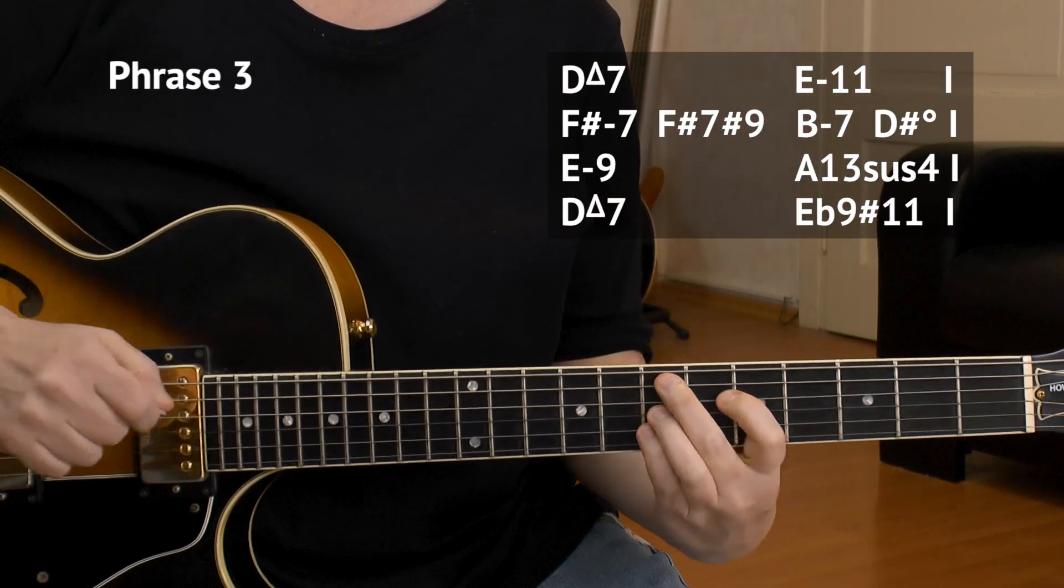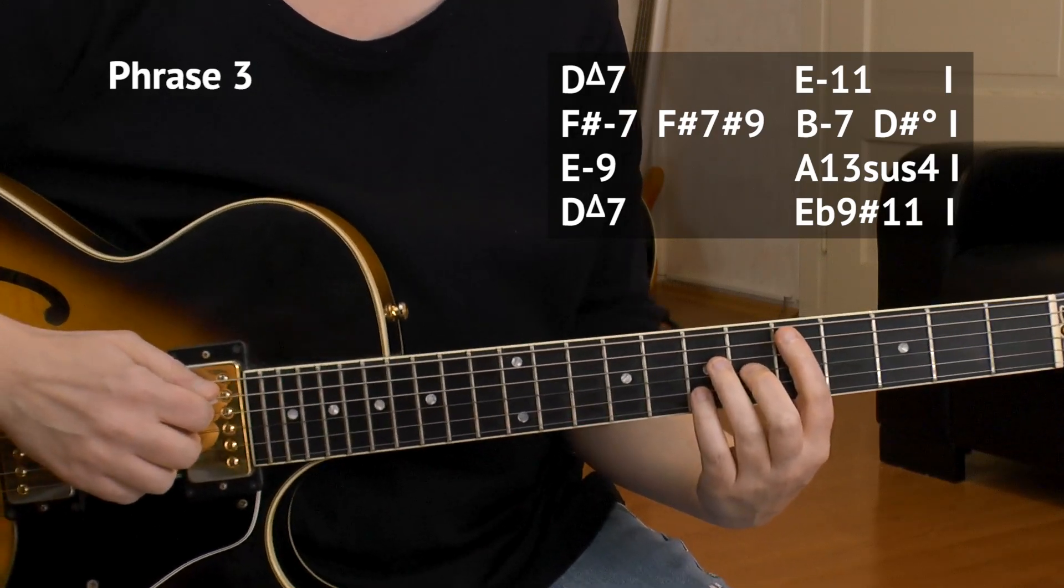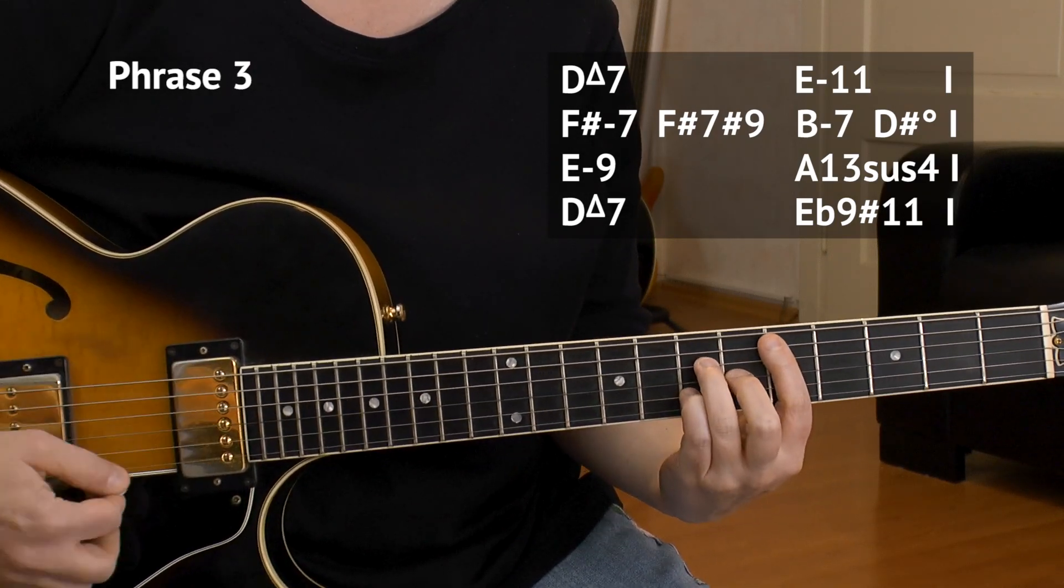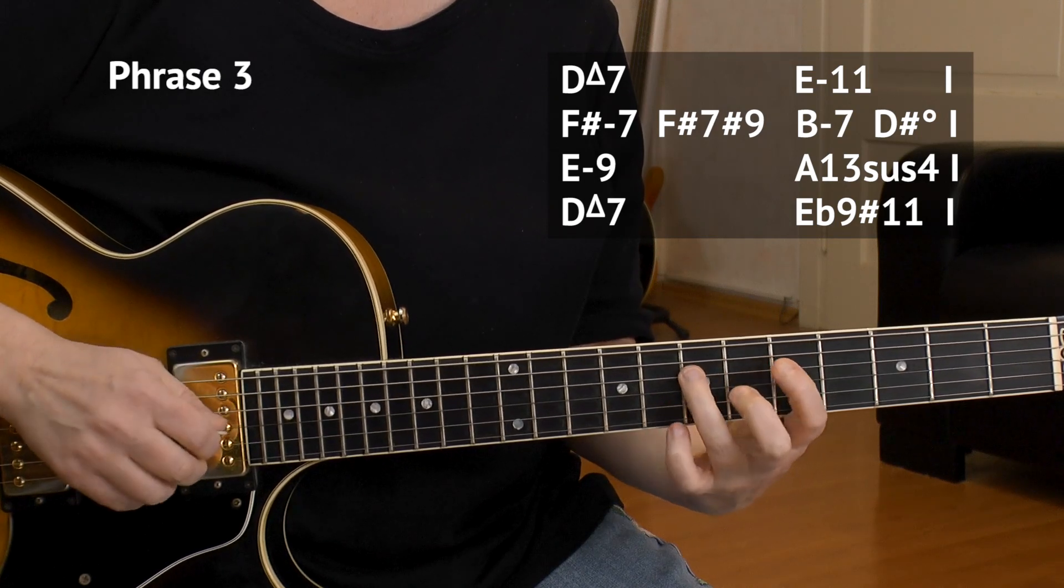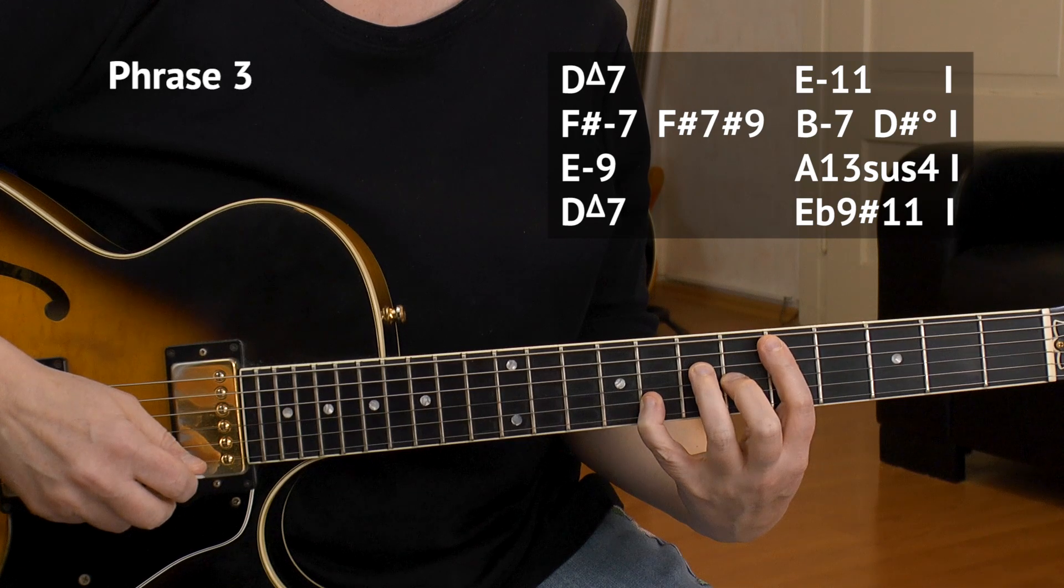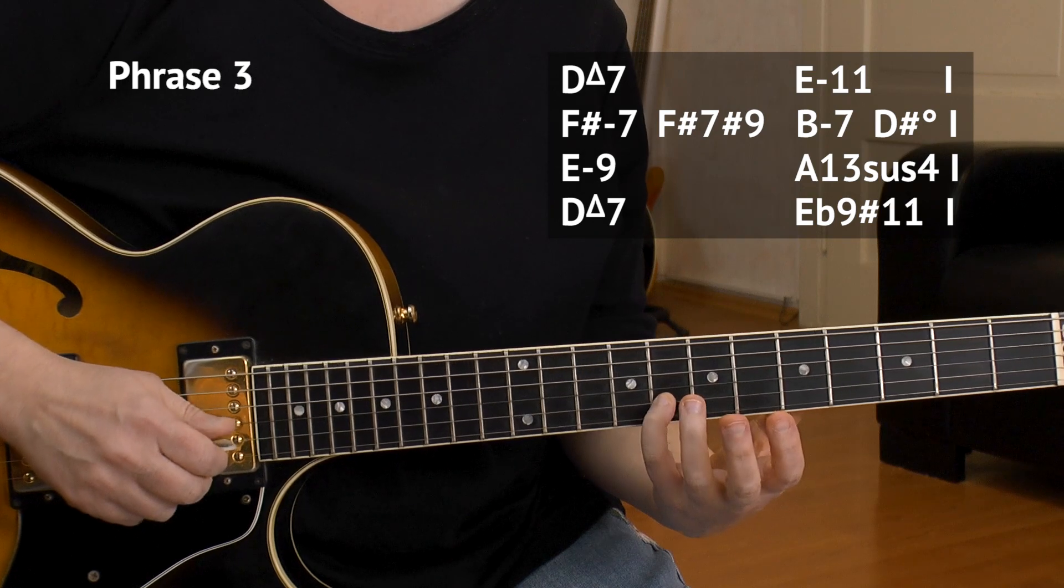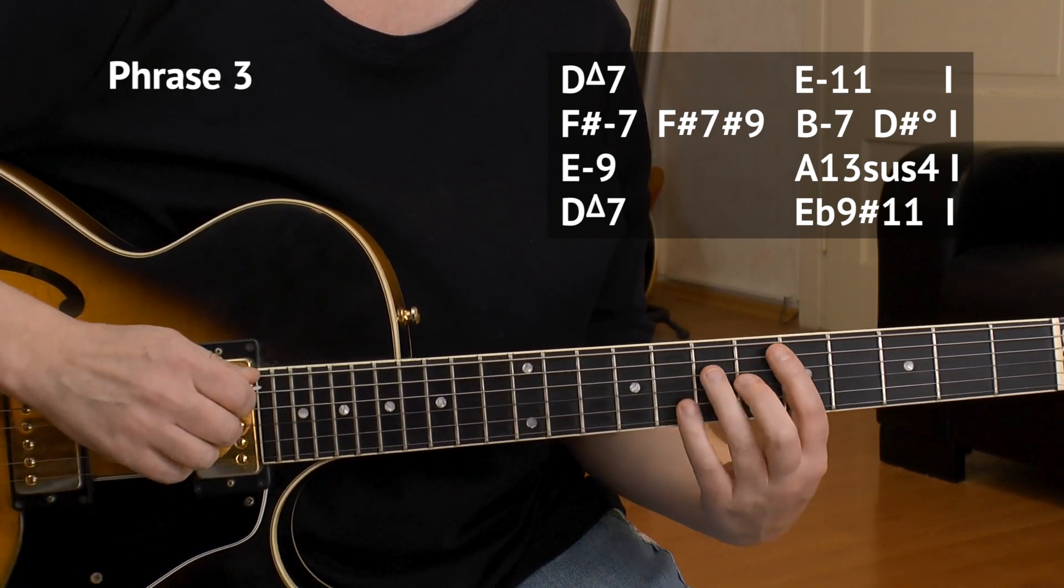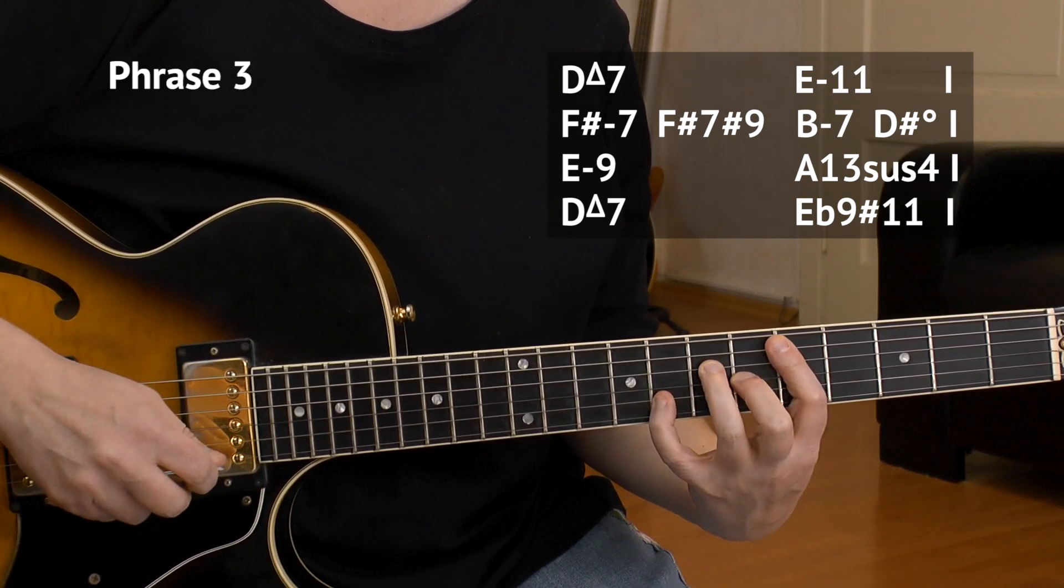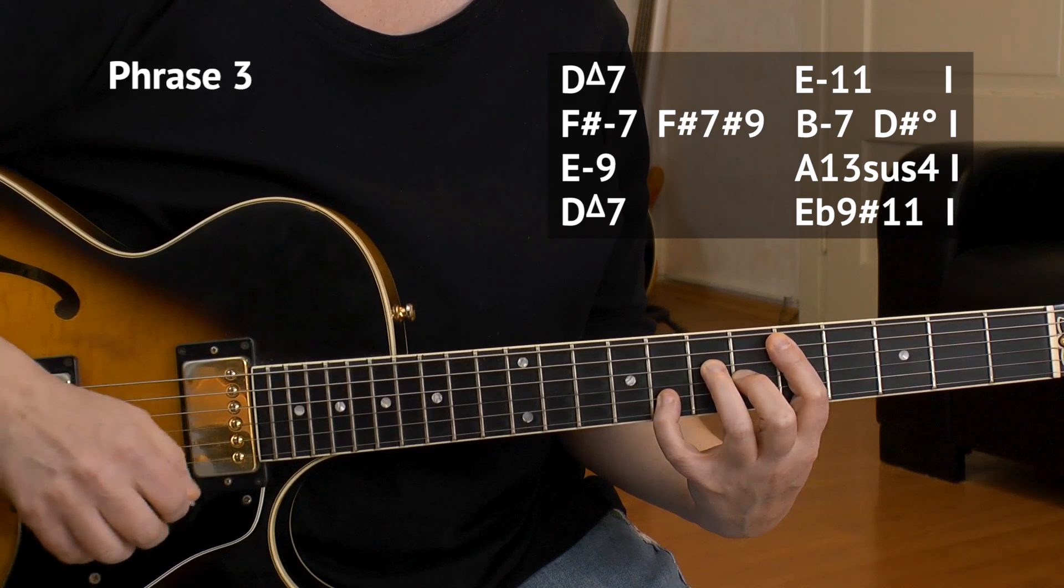And we have the resolution to D major 7. That's five, seven, six, seven, inner four strings. And then interestingly enough, the avoid note in the melody, the fourth, that's the eighth fret, the G of the B string. Then the same thing again, chord plus the avoid note, the G.